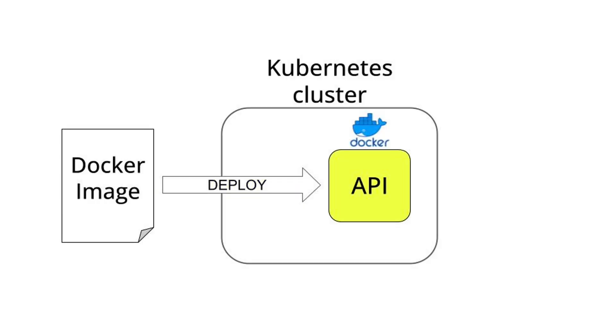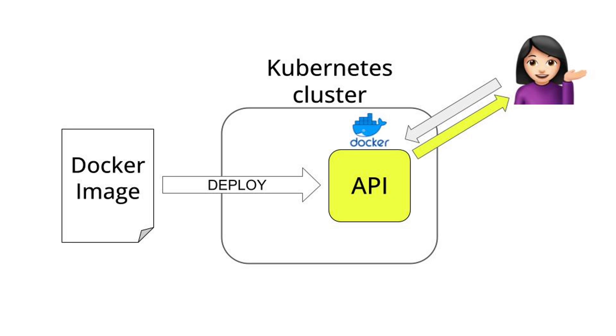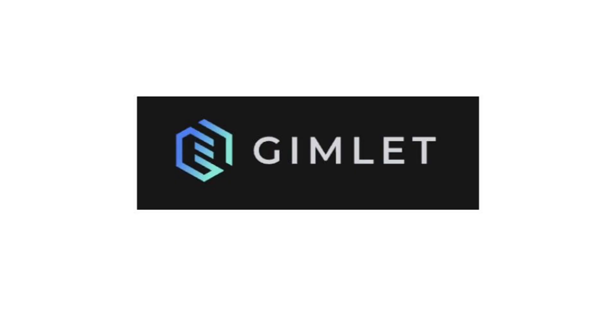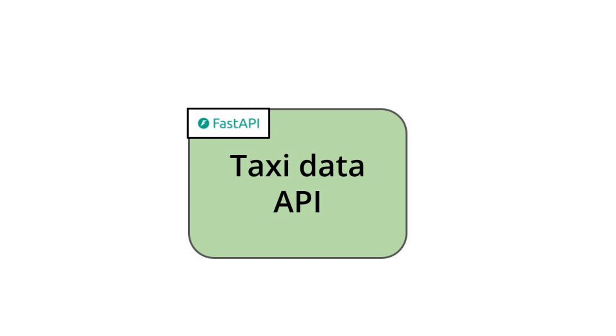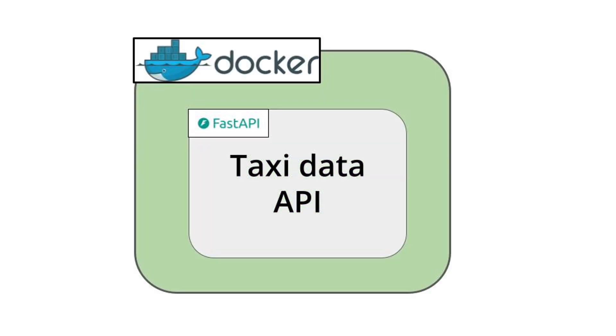In this video you will learn how to deploy a REST API to a Kubernetes cluster using a tool called Gimlet. Two weeks ago we built a REST API using FastAPI and we fully dockerized it, writing a professional Docker file — you can find the links below.